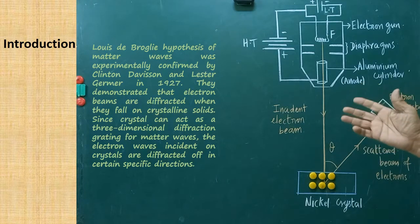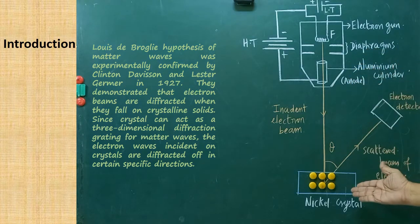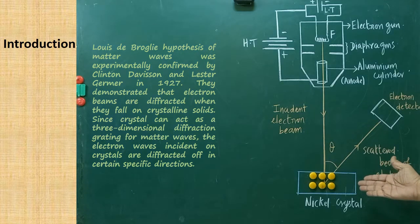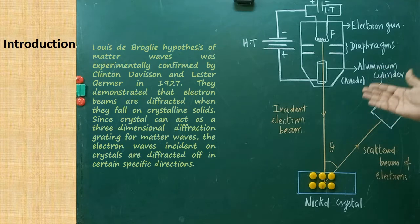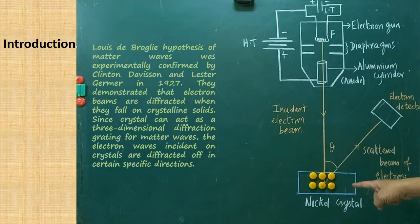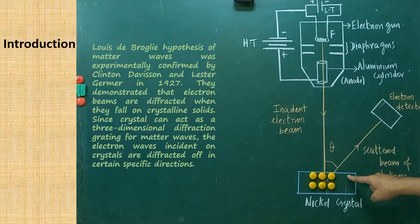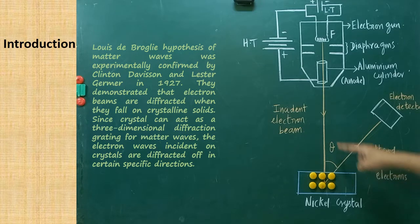They demonstrated that electron beams are diffracted when they fall on crystalline solids — here we have taken nickel. These crystalline solids act as a three-dimensional diffraction grating for matter waves, where matter waves means the electron beam.